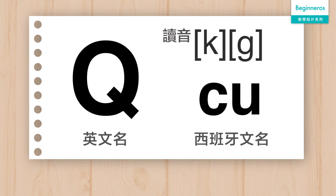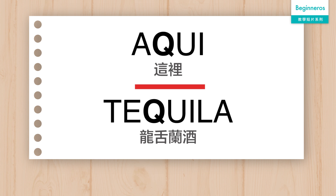好了，在這條片裡面我們將會學習 Q, R, S, T 的發音，listos！接下來的就是 Q，Q 的西班牙文叫做 Cu。要留意的就是 Q 永遠都不會在西班牙文裡面單獨出現，永遠都會連著 U，但是它的 U 就是不發音，而它的音就是 K。看看以下的例子，例如 Aqui, Tequila。